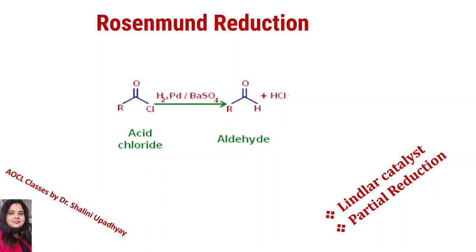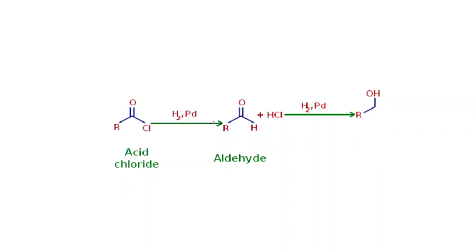HCl — hydrochloric acid — is removed as a byproduct. If we do not take BaSO4 in the case of Rosenmund reduction, what is the product? These are questions asked in many competitive exams. If you do not take BaSO4, the final product is alcohol. If we take BaSO4, the final product is aldehyde.